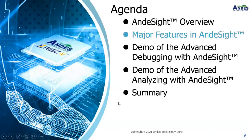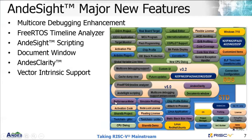Moving on to the major features in AndesITE: we keep on improving our IDE. For the current release, the major new features include multi-core debugging enhancement, the FreeRTOS Timeline Analyzer, AndesITE Scripting, a document window, AndesKlarity, and vector intrinsic support. AndesITE 5.0 has added more functionalities, which we will talk about in the coming slides.